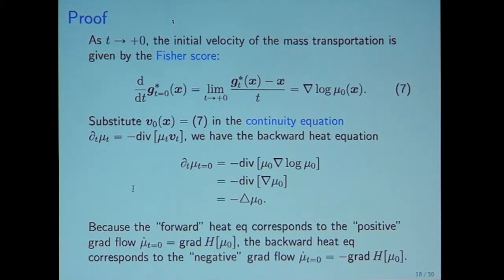By substituting the flux equals Fisher score, the Nabla log mu zero equals Nabla mu zero over mu zero and the two mu zeros cancel. Then it reduces to minus divergence gradient mu zero. This means the Laplacian. The negative sign is from the continuity equation. Because the forward heat equation corresponds to a positive gradient flow of the Shannon entropy, then the backward heat equation corresponds to the negative gradient flow.